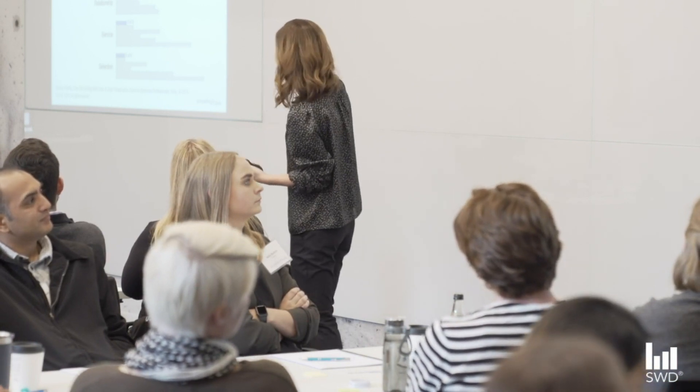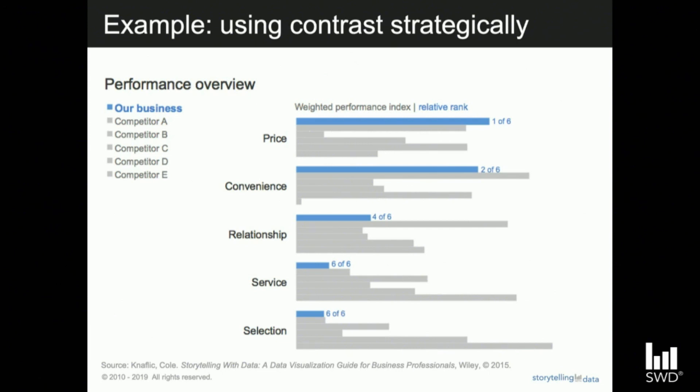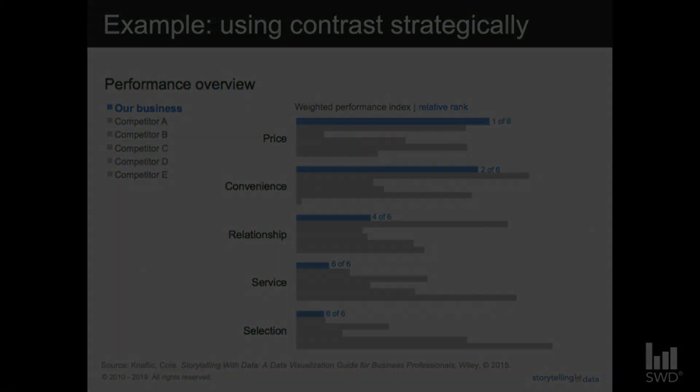This view allows me to easily make a couple of comparisons. I can scan across the blue categories and get a quick sense of how our business is doing across different categories. Or within a given category — relationship, for example — I can compare the end of the blue bar to the end of the various gray bars, and get a quick sense of how our business is doing relative to the competition. This is a more thoughtful use of contrast.